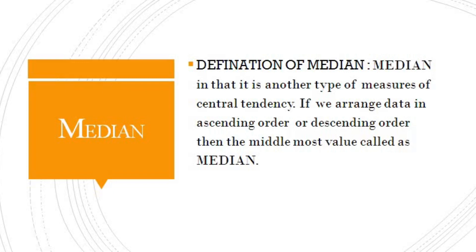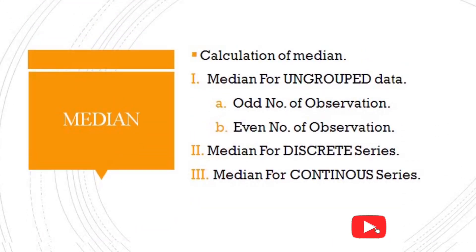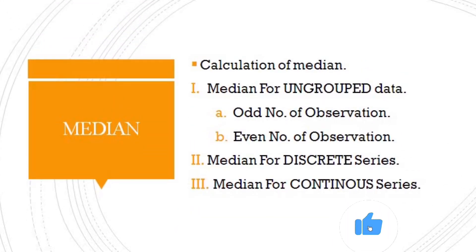If we arrange data in ascending order or descending order, then the middle most value is called the median. When we calculate the median, we first arrange the data in ascending or descending order, and then we get a formula to find the central value.